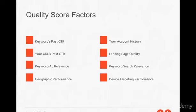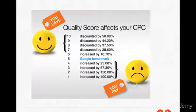Some other factors that go into quality score: keywords' past click-through rate, your URL's past click-through rate, keyword and ad relevance, geographic performance — if your ad is performing better in the US than the UK but you're targeting the entire world, look at geographic targeting for opportunities to improve ad rank — your account history, and a bunch of other factors. There's not really a specific weight assigned to each, but once you start getting into AdWords it's easy to adjust your quality score. At the end of the day it's really about relevance.